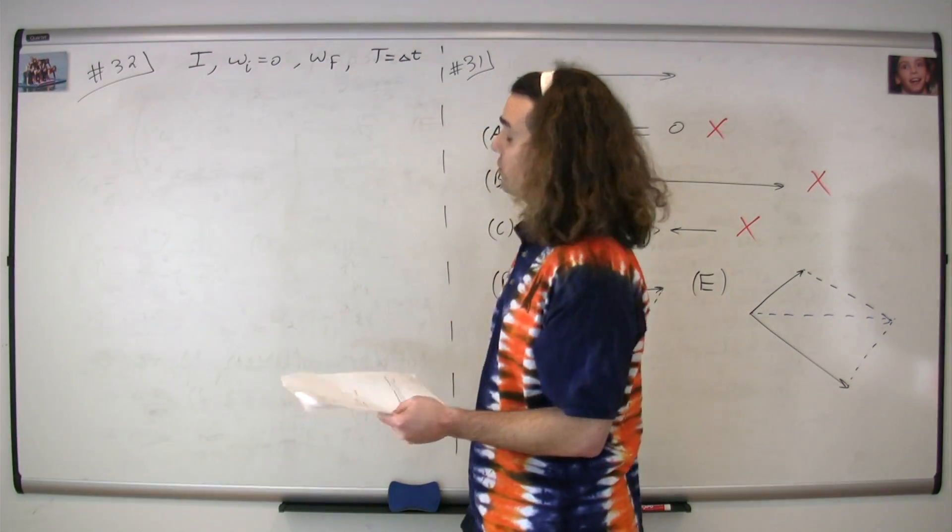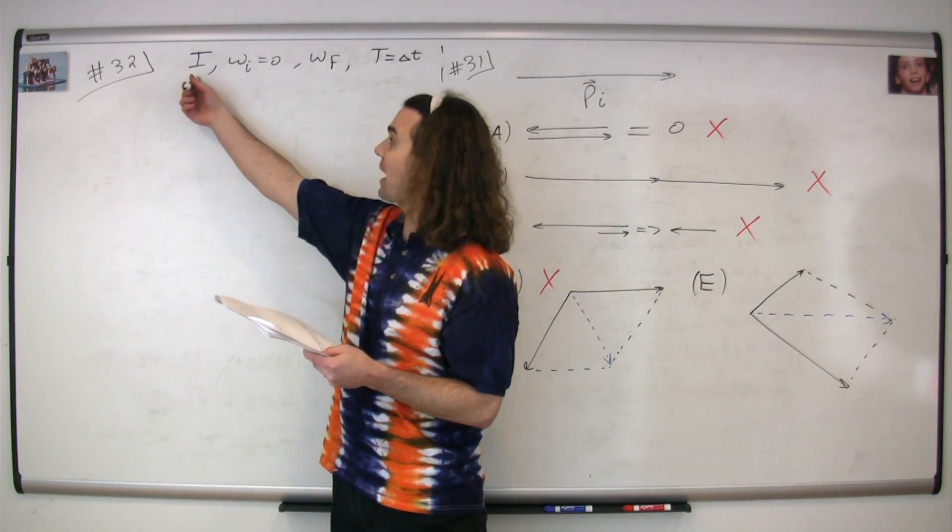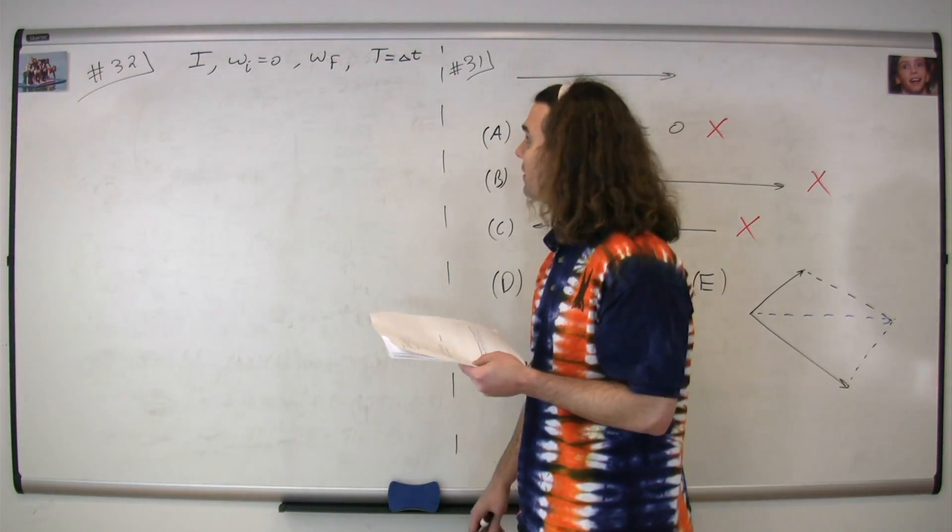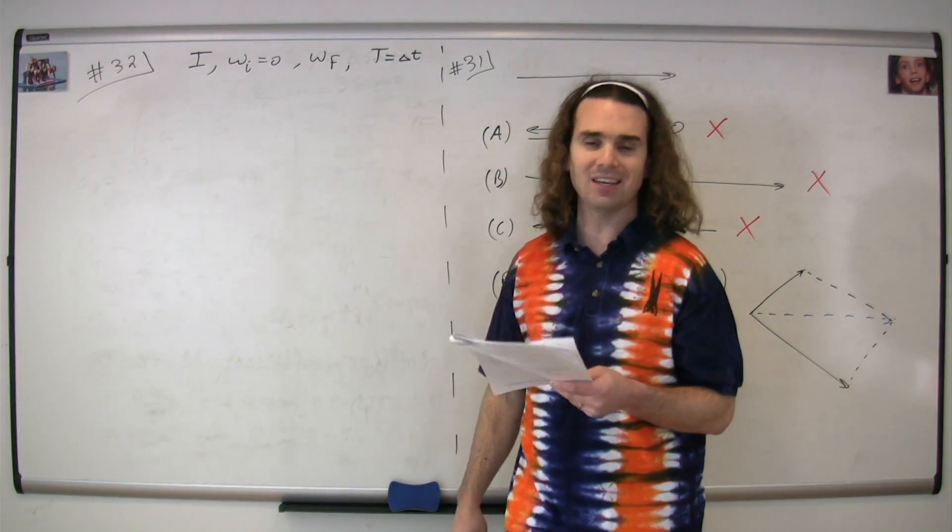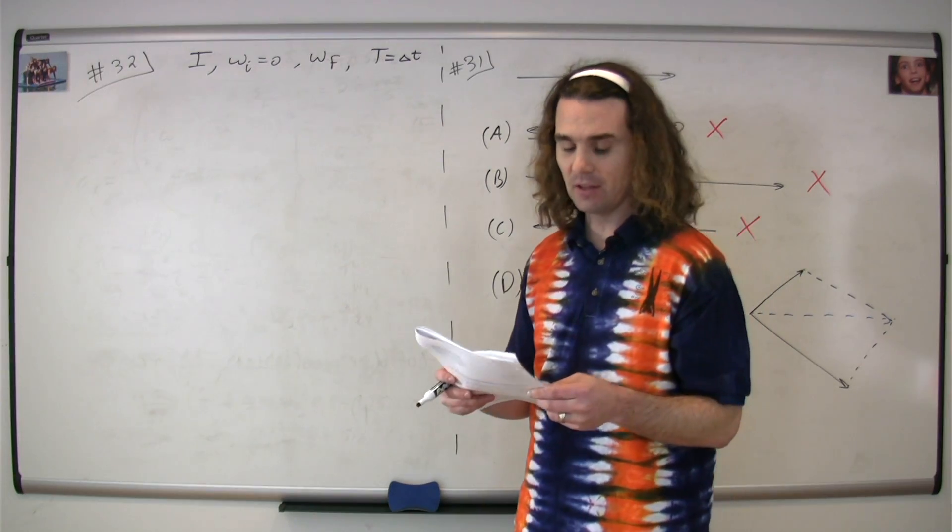Question 32. We have a wheel with a rotational inertia of capital I. We know its initial angular velocity is zero. It ends at some final angular velocity, omega final, and the change in time is equal to capital T. The question is, what's the average net torque on the wheel during this time interval?